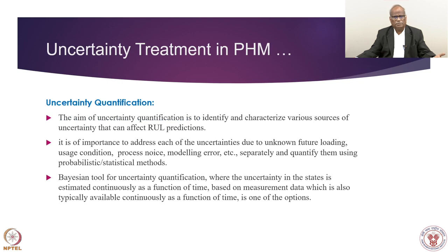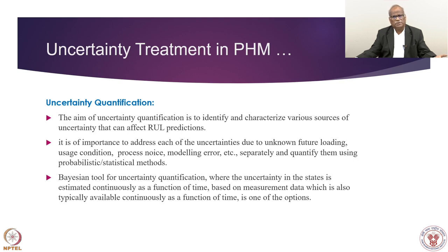Uncertainty quantification is done to obtain upper bound and lower bound. When these uncertainties are superimposed in terms of strength and stress, we get the probability of failure statement. Uncertainty analysis is useful in prediction — it signals when we have entered the probability-of-failure region, identified by the overlapping area of the two distributions. The role of uncertainty management is to keep the two distributions apart, maintaining a margin so they do not come closer. Bayesian method is another approach for quantification, and finally RUL estimation.